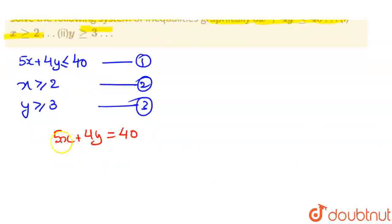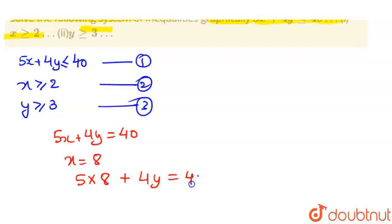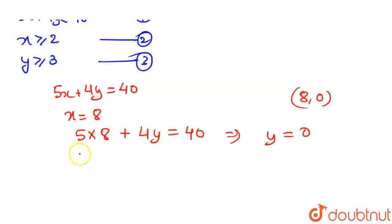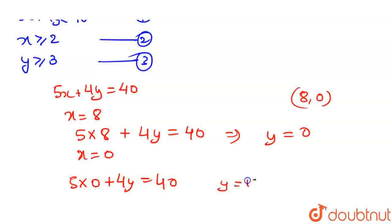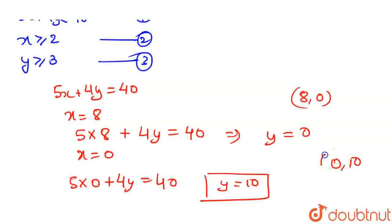We take 5x plus 4y equals 40. Put x equals 8: 5 times 8 plus 4y equals 40. Since 8 fives are 40, the 40s cancel out and we get y equals 0. So the first point is (8, 0). Now put x equals 0: 5 times 0 plus 4y equals 40, giving y equals 40 divided by 4, so y equals 10. The second point is (0, 10).